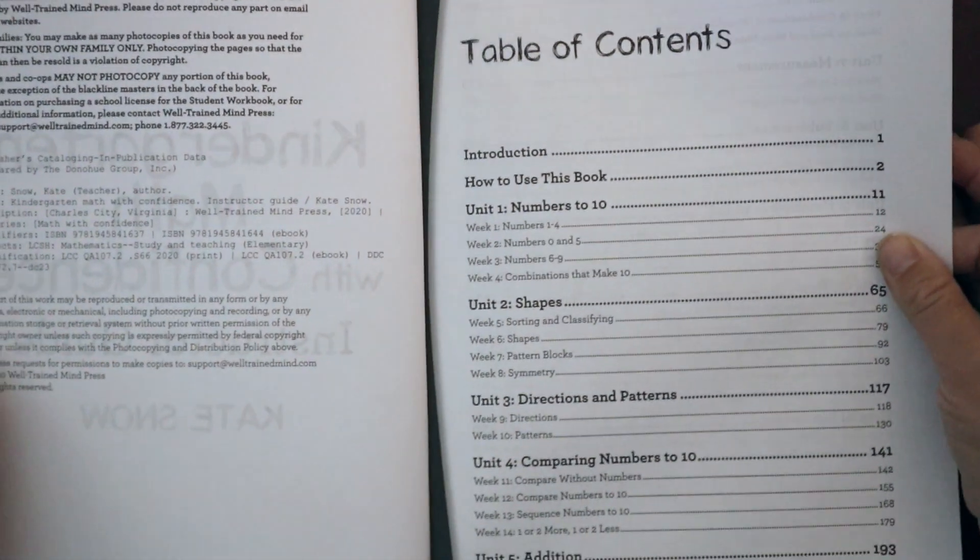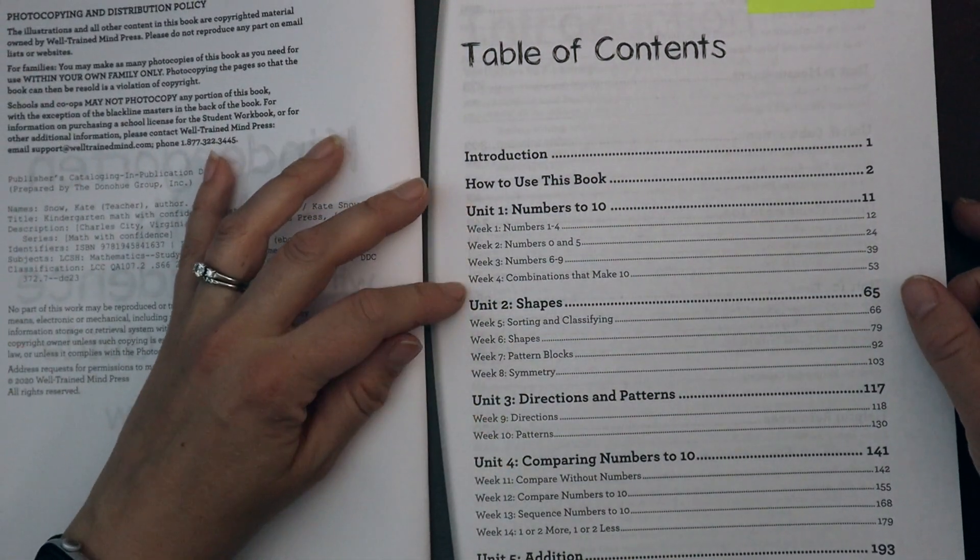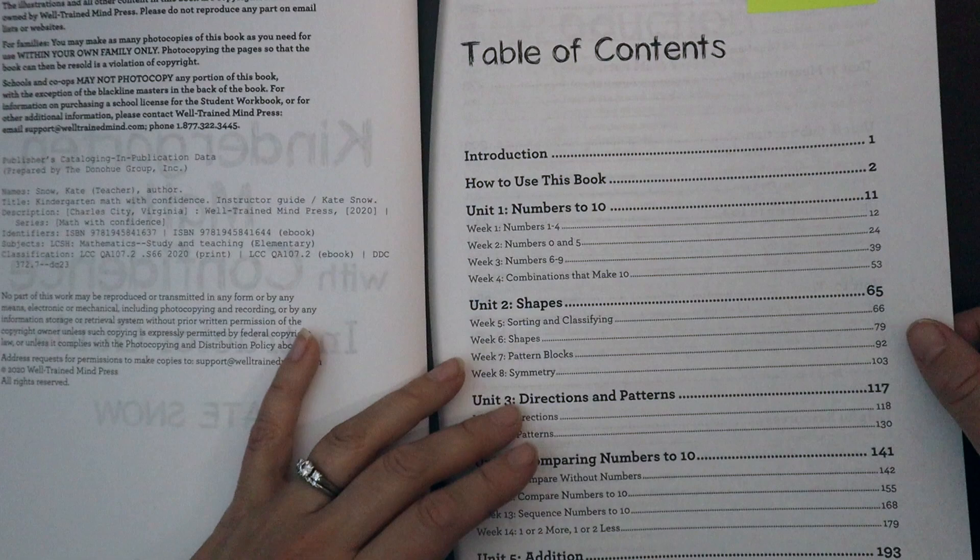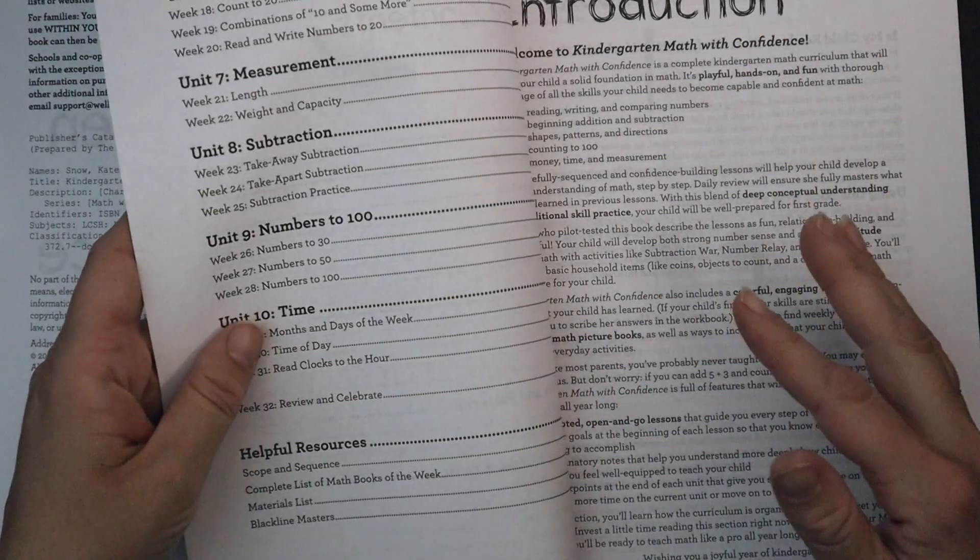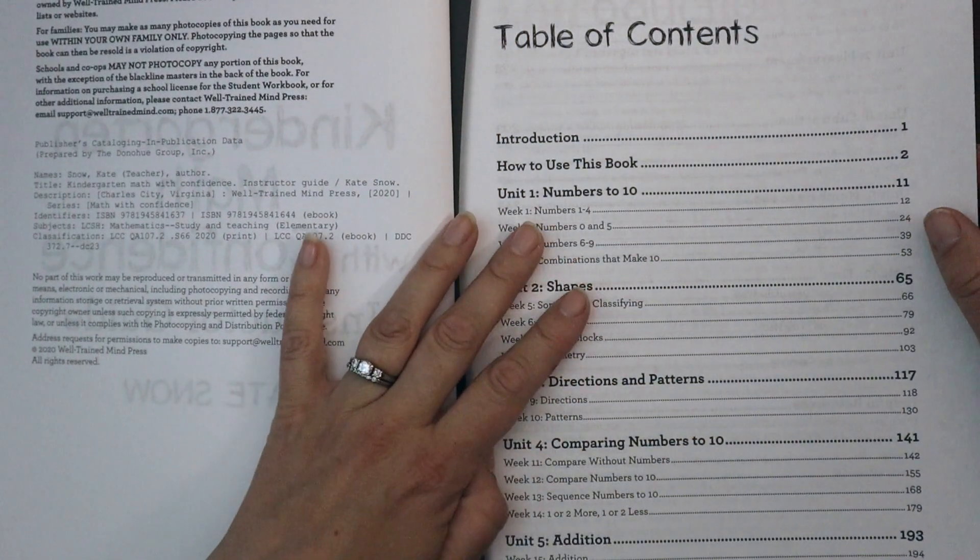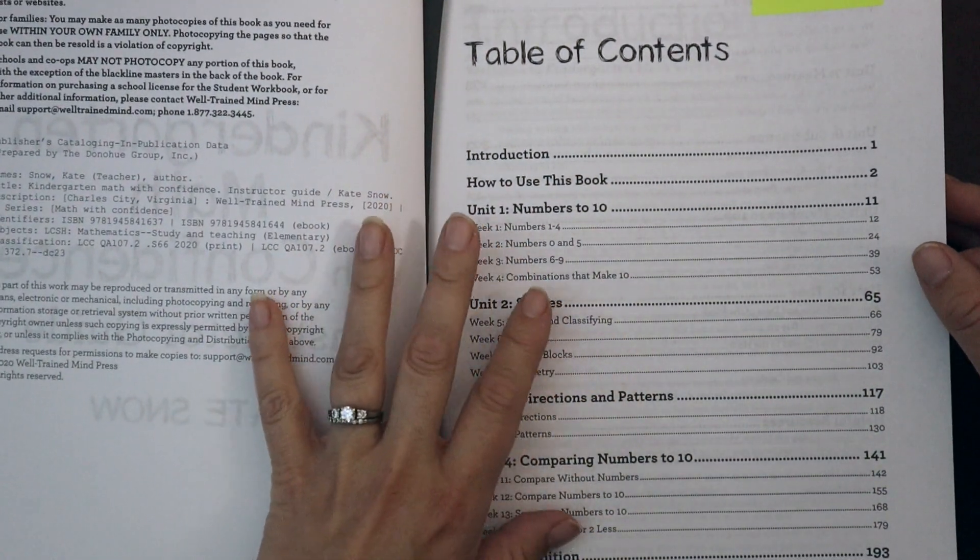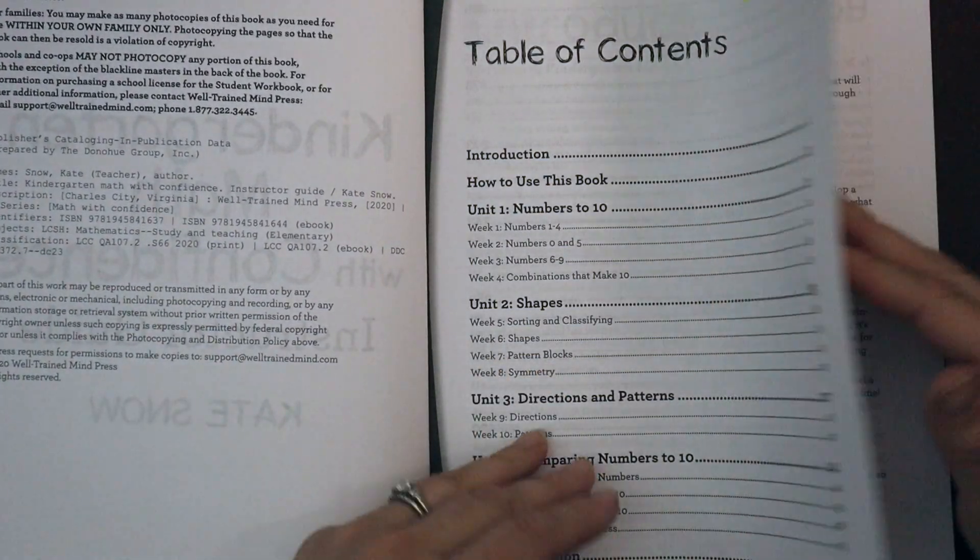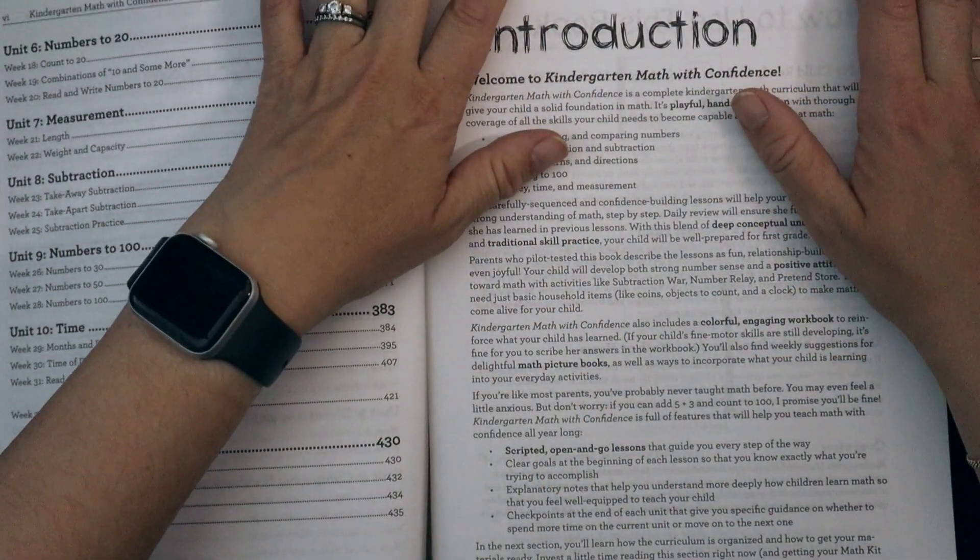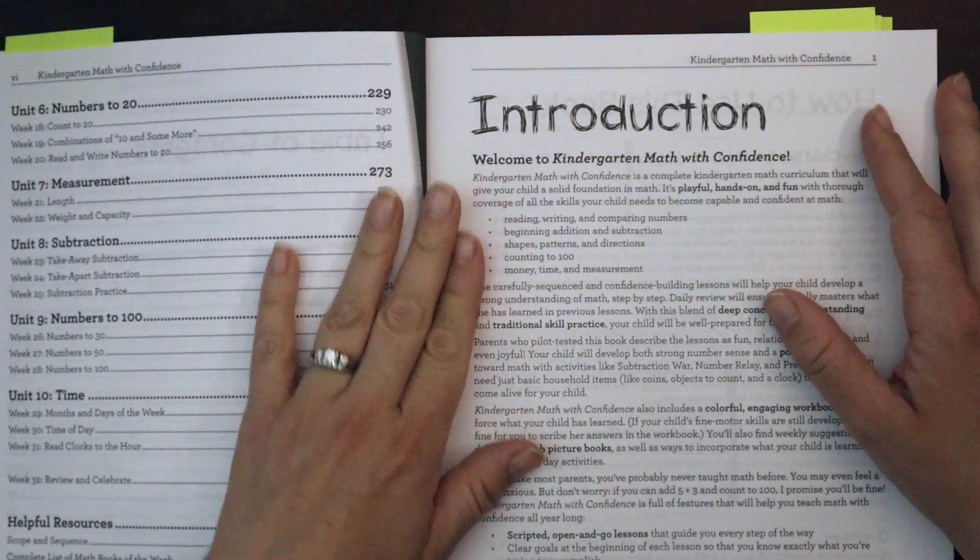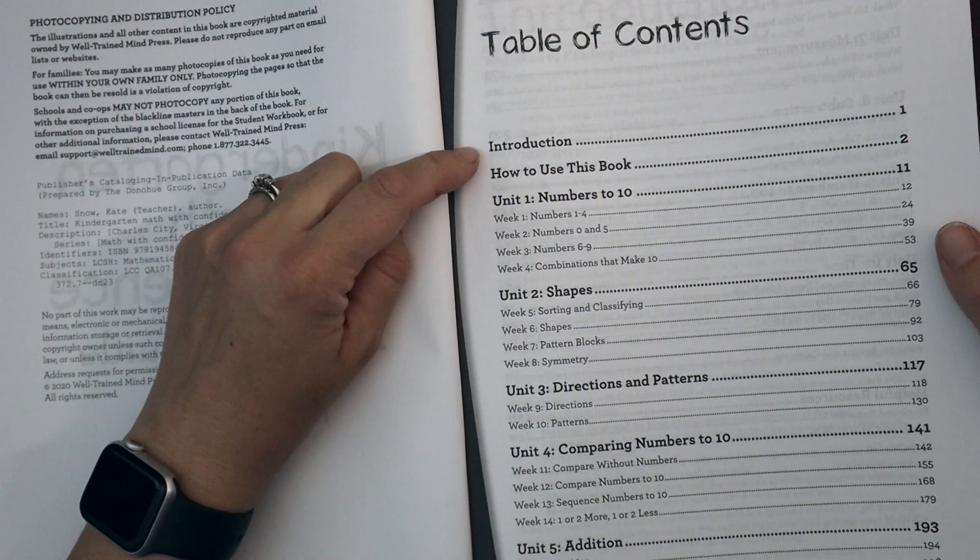Each unit is then broken down into weeks. There are four weeks for most of the units. Some of them have only a couple like addition and measurement have less than four. And then each week is broken into roughly five lessons. There are four lessons and then a like extension lesson. So this would work if you're doing a four or five day a week homeschool.